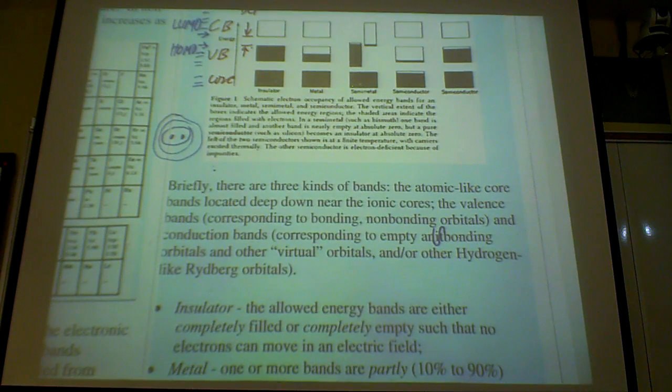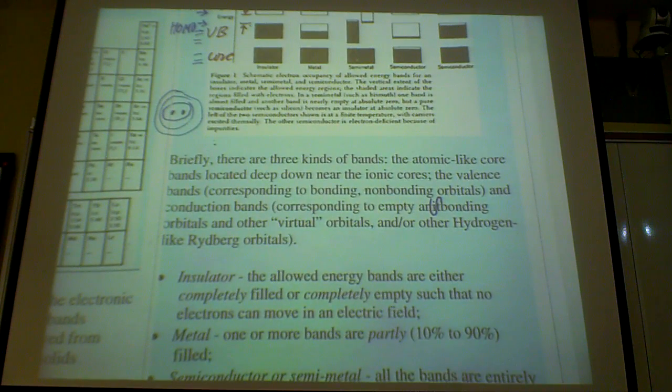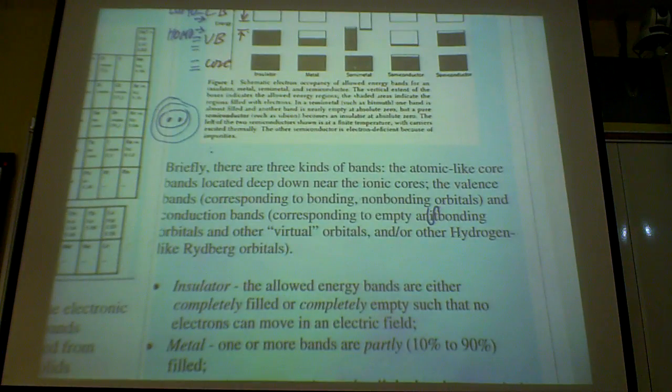However, if you have a metal, what would happen, one of the bands is partially filled or partially empty. And partially means 10 to about 90 percent. So in a situation like this, this is a metal. So now you have an empty band, what does that mean? That means that if you apply a bias, your electron can go to some empty band location.